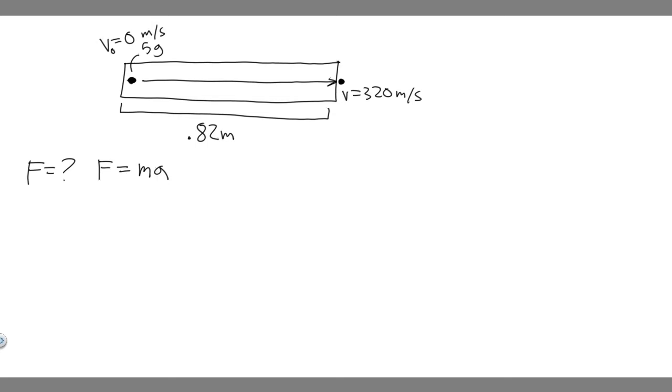So what we want to do first is just solve for the acceleration. Notice the variables we're given. We're given v sub 0, which is 0 meters per second. We're given the final velocity of this interval, which is 320 meters per second. And we're also given the change in the distance, the distance it's traveling, calling it delta x, which is just 0.82 meters.